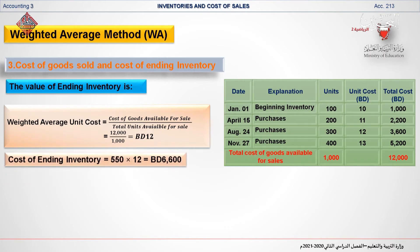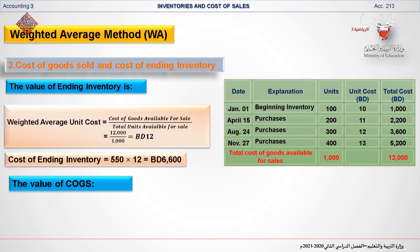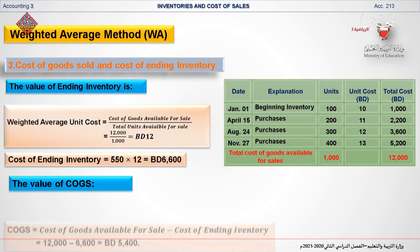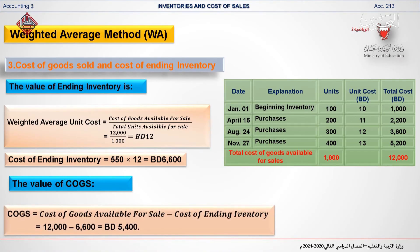To calculate the cost of ending inventory, multiply the number of ending inventory units by the weighted average unit cost just calculated: 550 multiplied by 12 BD equals 6,600 BD. Now you are ready to calculate the cost of goods sold by applying the formula: cost of goods available for sale minus cost of ending inventory, which is 12,000 minus 6,600 BD.